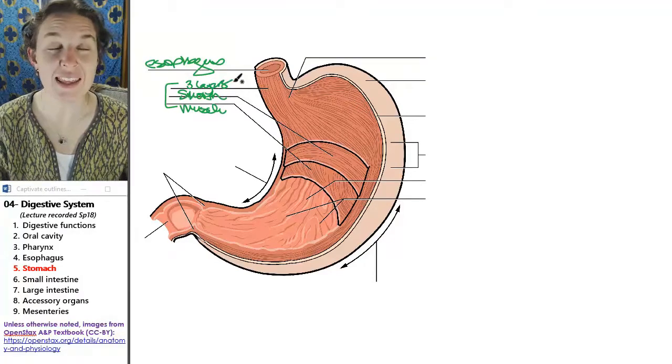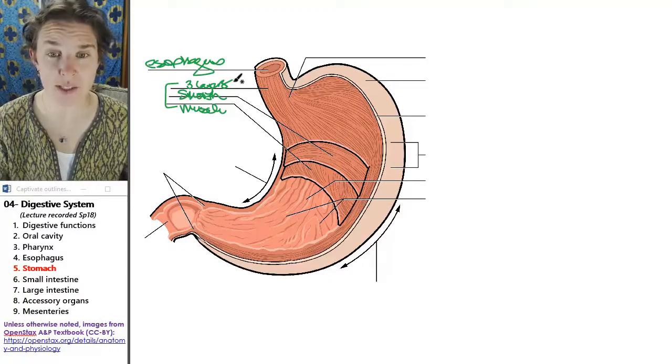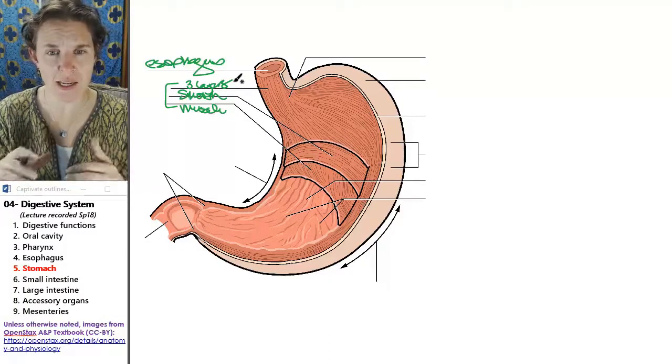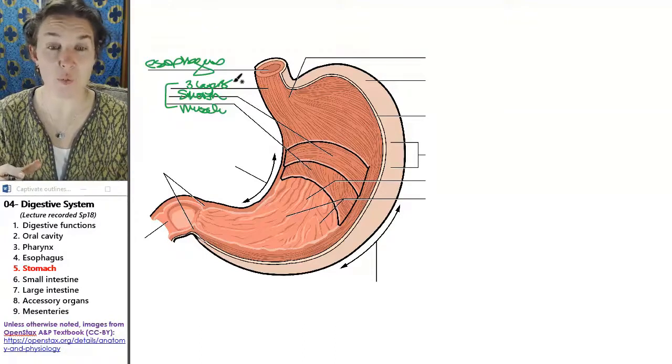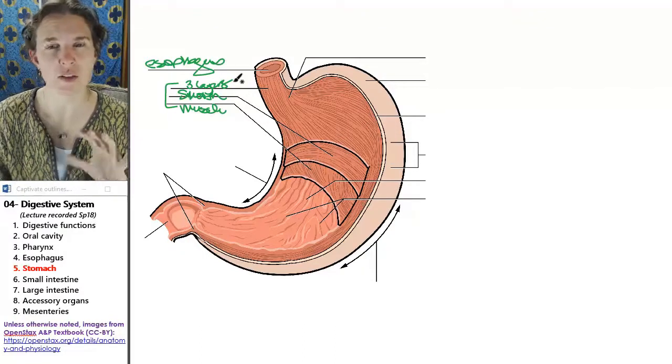And in the next lecture, we're going to name those layers, of course, and understand why would you think that we would need three layers of smooth muscle surrounding the stomach?